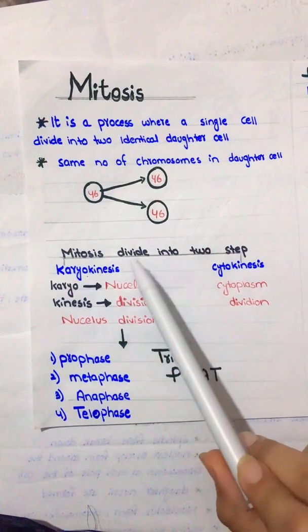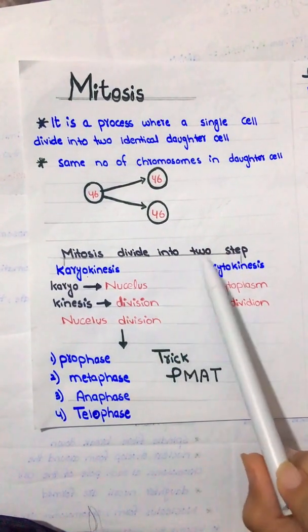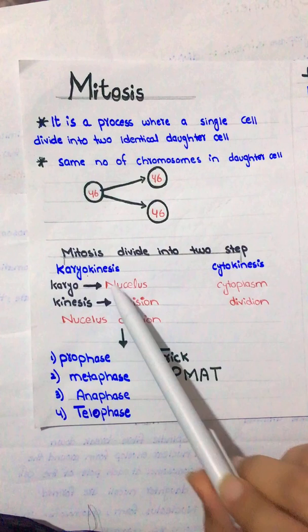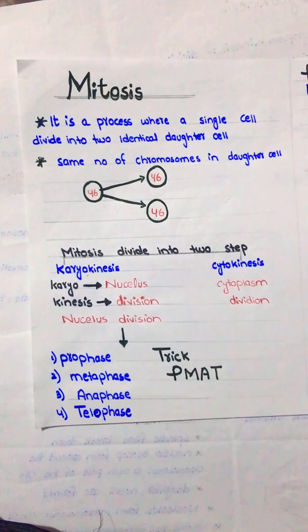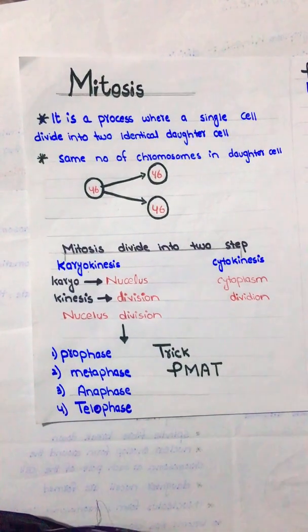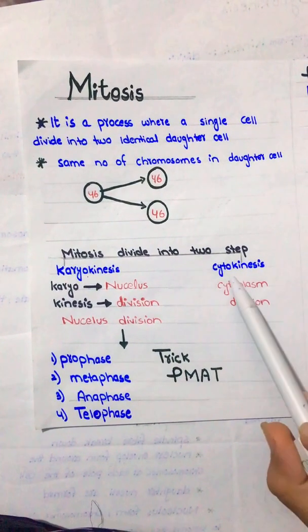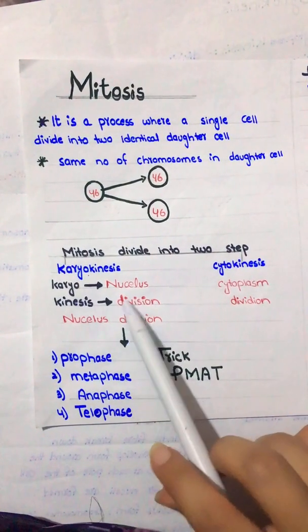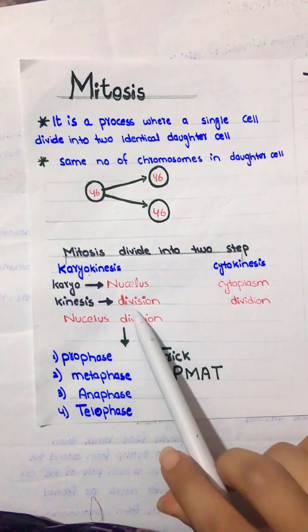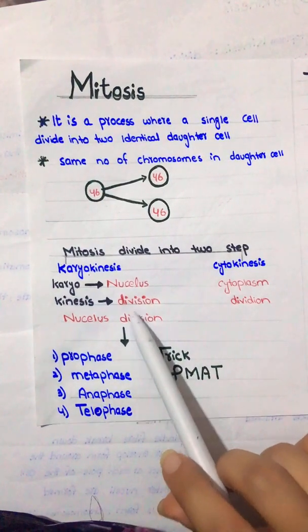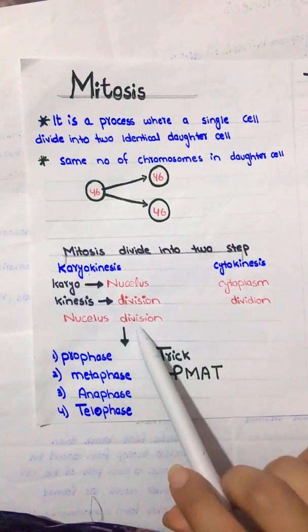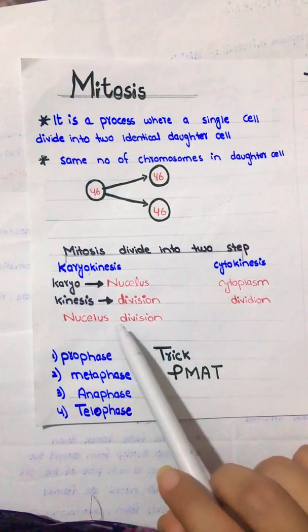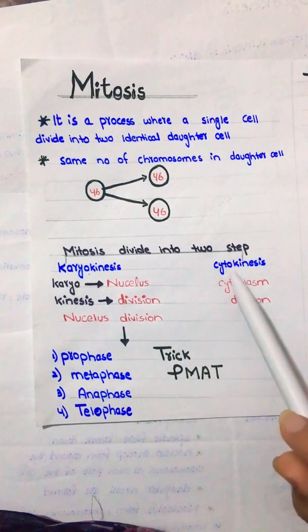Mitosis is divided into two steps. The first is karyokinesis and the second is cytokinesis. Karyo means nucleus and kinesis means division, so karyokinesis is nucleus division.